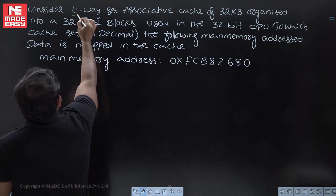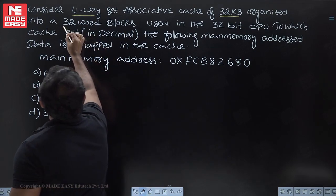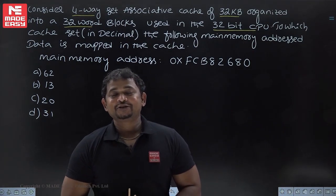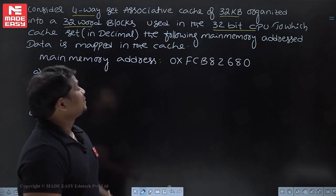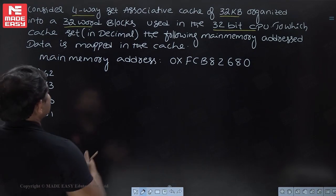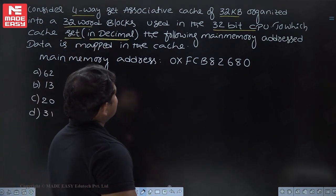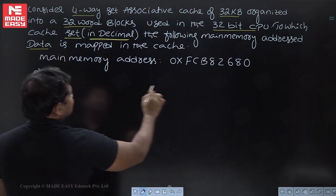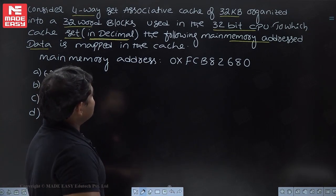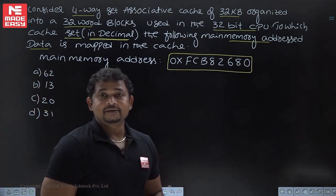Consider a four-way set associative cache of 32 KB organized into 32-word blocks, used in a 32-bit CPU. To which cache set in decimal is the following main memory address mapped? We need to find out the set number of the cache in decimal for the given main memory address.